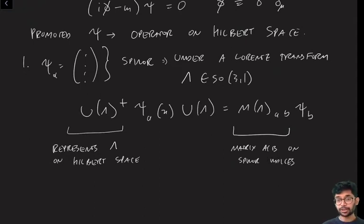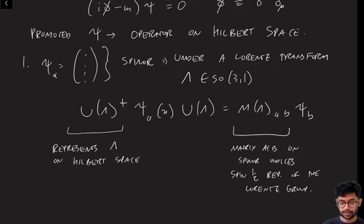So it represents gamma on the Hilbert space of the quantum field theory. On the other hand, this M here is just a normal matrix, and this matrix acts on spinner indices A and B. And this acts on spinner indices in the way as to give you a spin half representation of the Lorentz group.